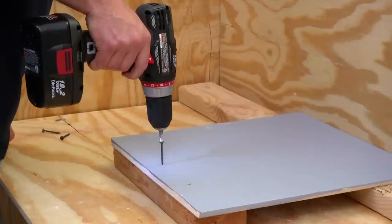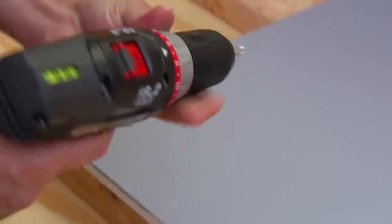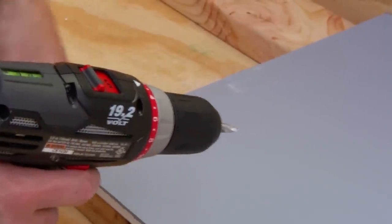For example, if you're driving screws into drywall, you want to stop before you crush the surface. Use a scrap piece of material, start with a lower number and adjust the clutch to stop at the right point.